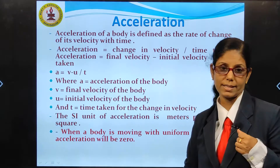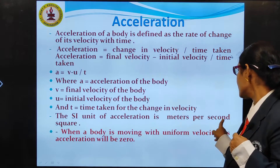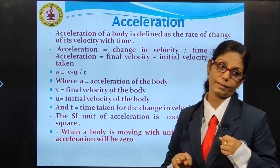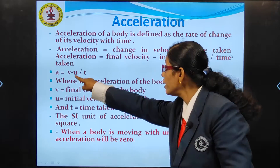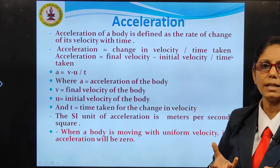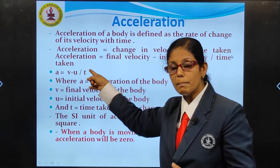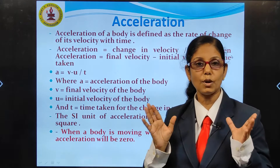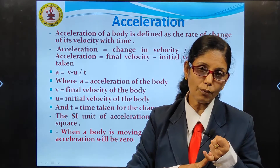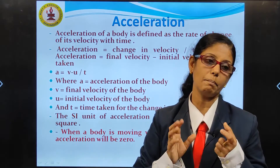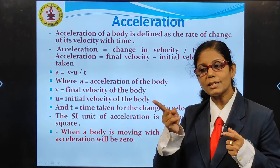Now what is the SI unit of acceleration? This is very important — a point where you may make mistakes. The unit of acceleration is meters per second square. How? From the equation A equals V minus U upon T: V minus U is change in velocity, whose unit is meter per second. Dividing by time in seconds gives meter per second square. So the SI unit of acceleration is meter per second square — don't confuse it with the SI unit of velocity and speed, which is meter per second.